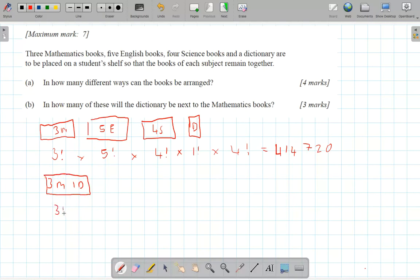So this is three factorial. But I could put the dictionary at the front or at the back. So there's two different arrangements in there. Then I've got to times it by the five English books together and the four science books together.